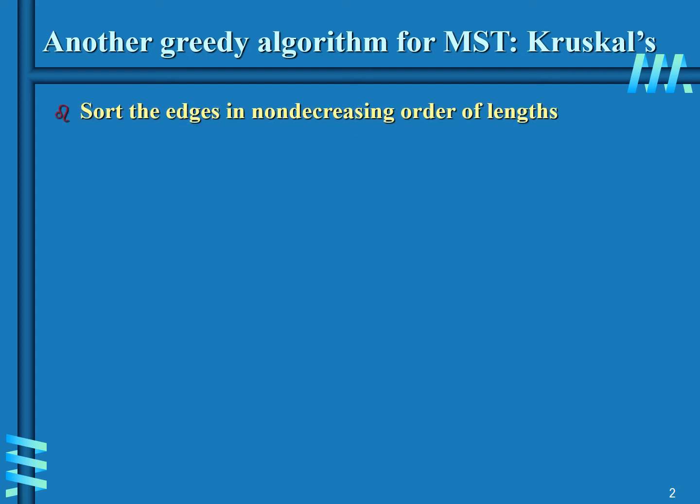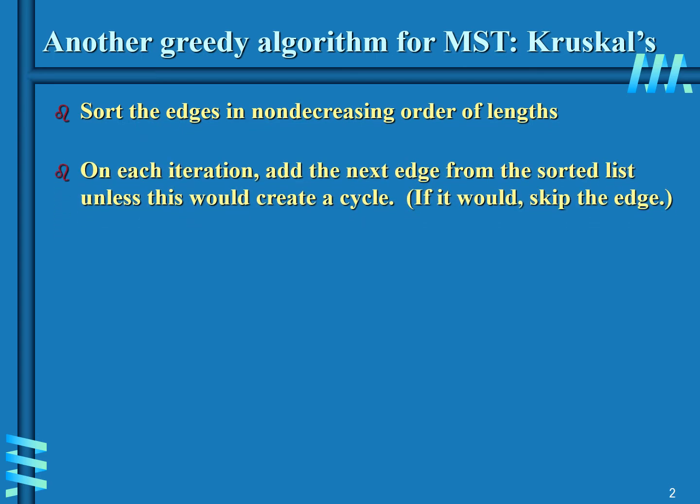For Kruskal's algorithm, first sort the edges in non-decreasing order of lengths. On each iteration, add the next edge from the sorted list unless this would create a cycle. If it would, skip the edge.